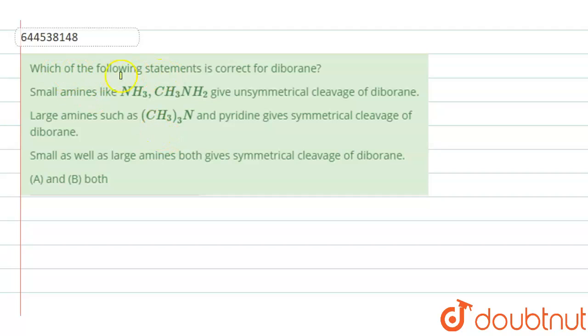Hello everyone, we'll look into this question. Which of the following statements are correct for diborane? Option 1, small amines like ammonia and CH3NH2 give unsymmetrical cleavage of diborane. Option 2, large amines such as trimethylamine and pyridine give symmetrical cleavage of diborane.